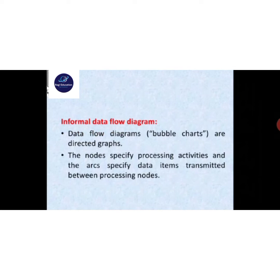The informal data flow diagram is a bubble chart or directed graph. The nodes specify processing activities and the arcs specify data items transmitted between processing nodes. In the bubble chart, circles represent nodes (processing) and arrow marks represent arcs (transmitted information).